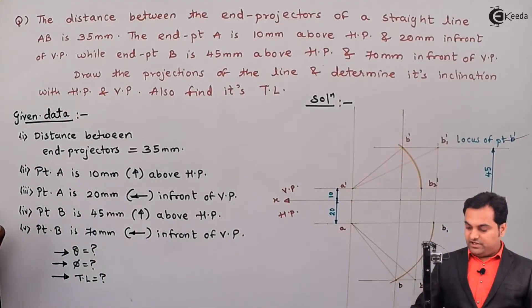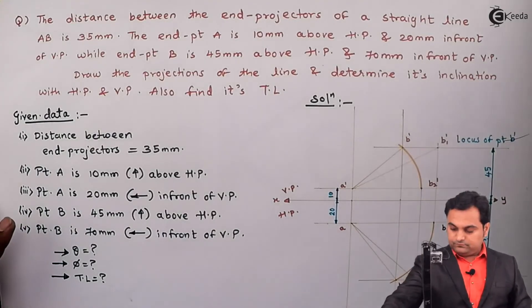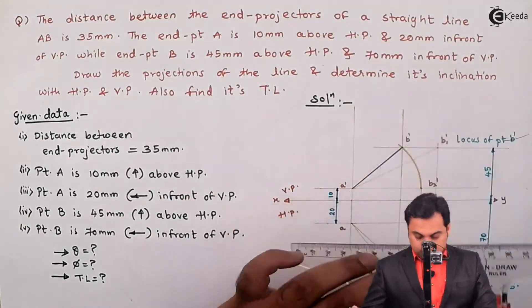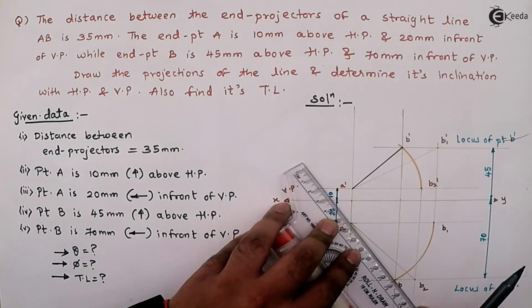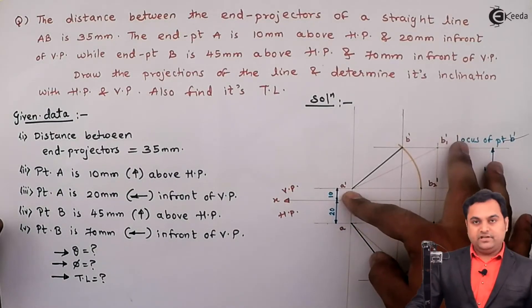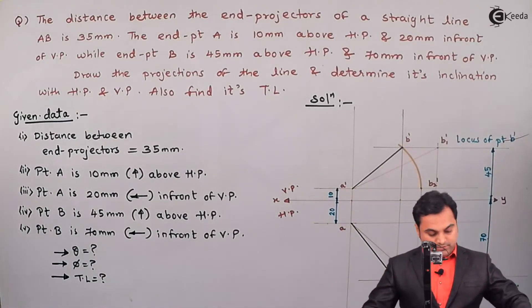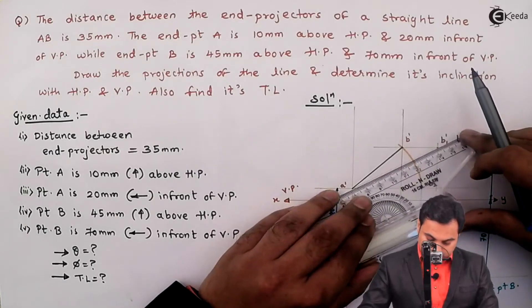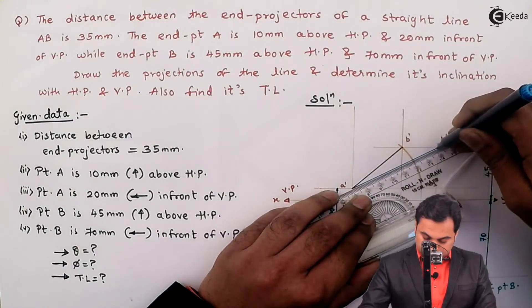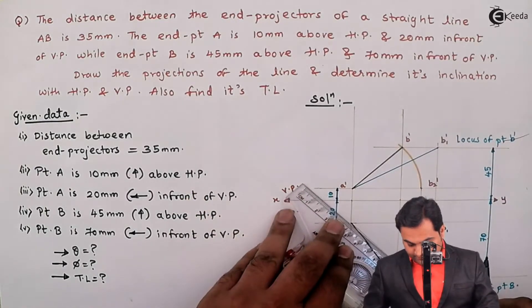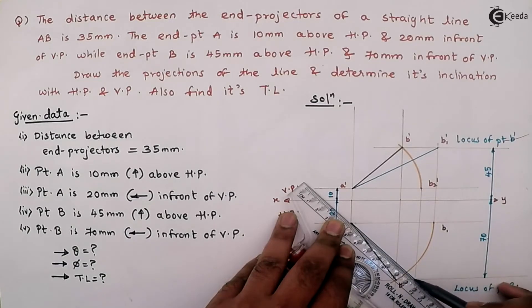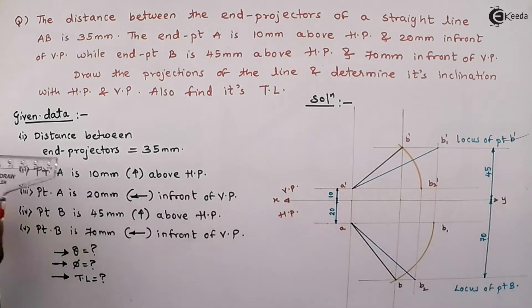Next, here I will make AB and A' B' dark because these are the actual lengths of the line. Next, I will make A' B1' medium dark. Similarly, A' B2' will be medium dark.